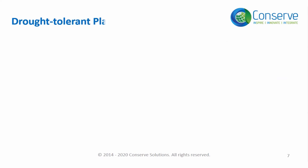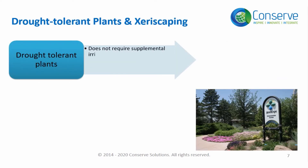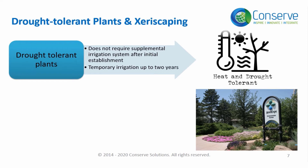Drought tolerant plants do not require supplemental irrigation after initial establishment. They may require temporary irrigation for up to two years during the establishment period.